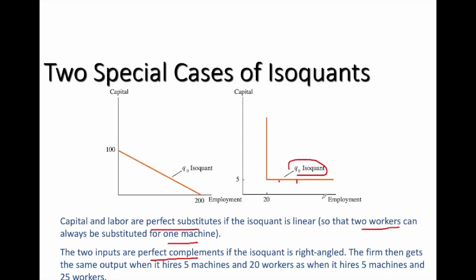Regardless of how many workers the firm adds to the five units of capital, it becomes a case of perfect complementarity. The firm can also employ 20 workers with five machines or even more than five machines and still produce Q0. We can hold capital at five units and keep adding workers, or hold workers at 20 and keep adding capital — either way the output remains Q0. This gives us what we call the right angle isoquant, where there is no substitution effect and a change in wage does not alter the input mix at all.